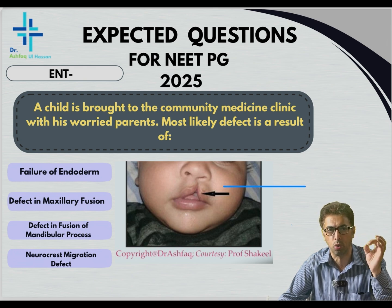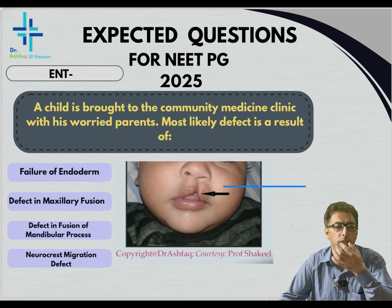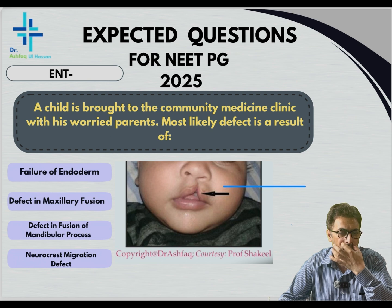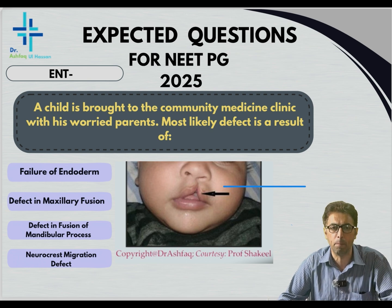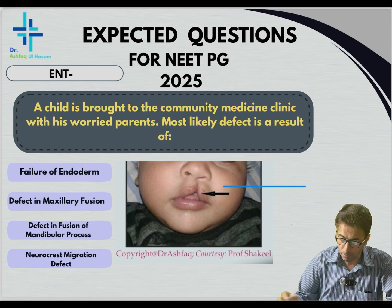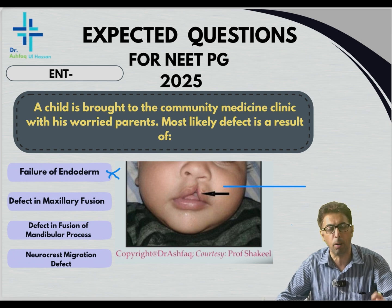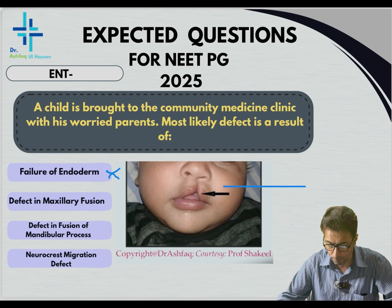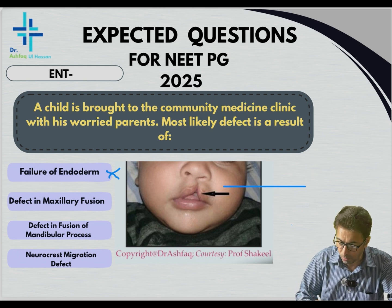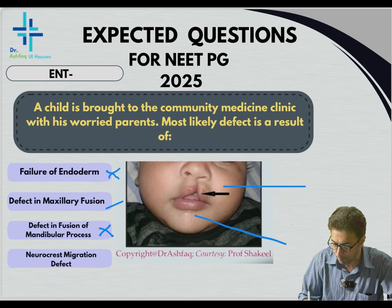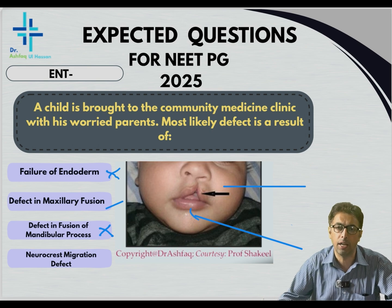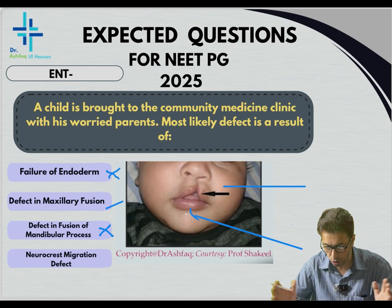Very important. This is a simple conceptual question. These are the maxillary processes which give rise to the upper part of the face, and this is the cleft lip on the upper part. Failure of endoderm — the endoderm, ectoderm, and mesoderm are germ layers, and those options relate to their derivatives. Coming to the defect in the maxillary process — looking at the figure, this is the correct answer. Defect in the fusion of the mandibular process would cause a defect in the lower jaw, not here. A lower cleft lip would be the result of defective fusion of mandibular processes.